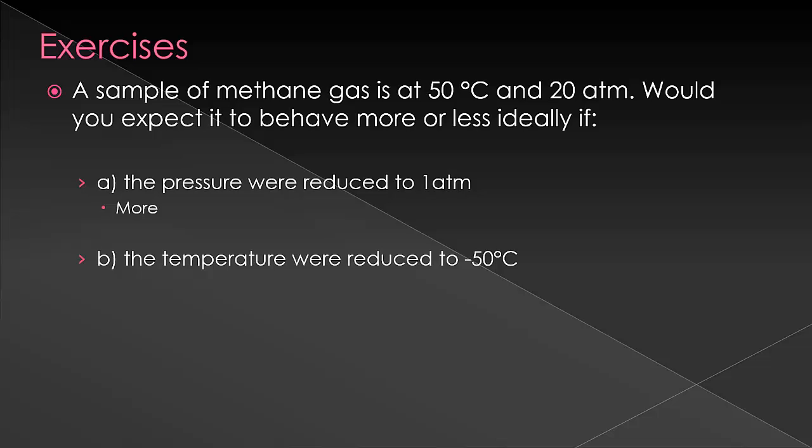Now, what if we reduce the temperature down to negative 50? So, now we're taking it and we're making it quite cold. So, think about what that does to the molecules. It's going to slow the molecules down and if you're slowing the molecules down, now they have more time to interact with each other and since they have more time to interact with each other, we're going to have a deviation from ideality or we're going to move away from being an ideal gas because of those extra interactions that are occurring. So, that's a very conceptual way of talking about ideal gases.